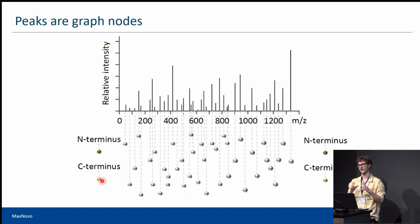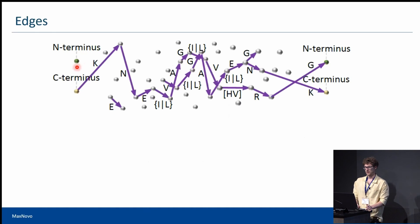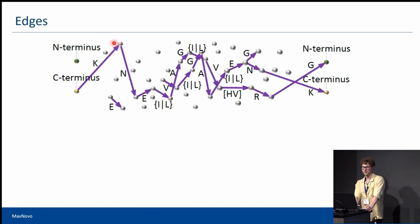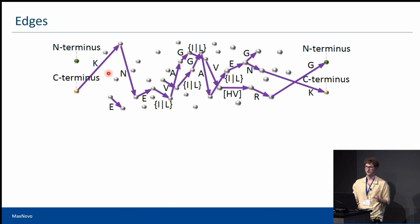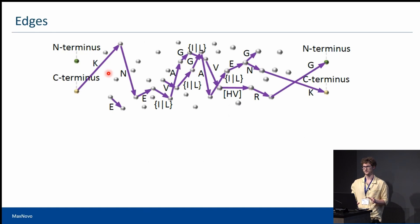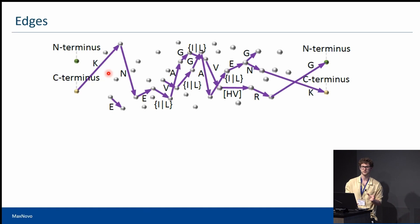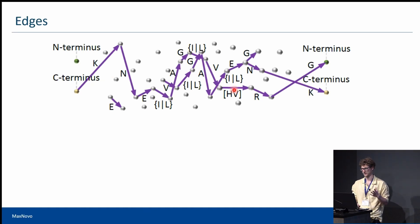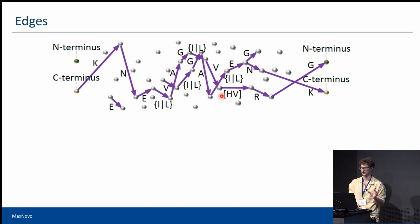We do not mix ions from B and Y series in the same sequence. After constructing nodes, we construct edges. One can put an edge between nodes if the MZ distance corresponds to the MZ of one or two amino acids. We allow two amino acid steps because sometimes the spectrum has missing or noisy peaks. As a compromise to increase the number of complete sequences, we allow MaxNova to skip a missing or noisy peak and make a guess to the second furthest node — for example, an HV step. Note that for two amino acid steps, we cannot distinguish the position between those two amino acids.